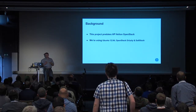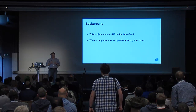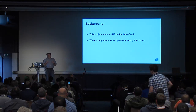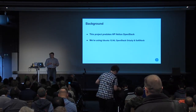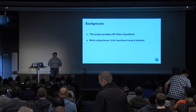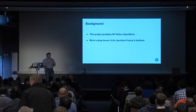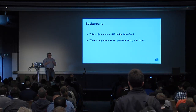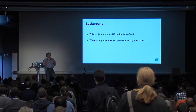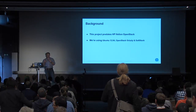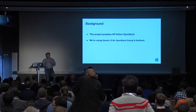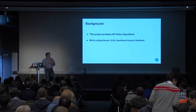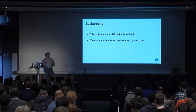A little bit of background. This project predates HP Helion OpenStack, so this is not about a triple O deployment. We're using Ubuntu 12.04 as our base operating system, and we're using Ubuntu's OpenStack packages and SaltStack for configuration management and orchestration. Our real challenge was about building a pipeline that worked with packaged OpenStack and gave us an ability to build a multi-node development environment that people could use on their own personal workstations. Hopefully many of these principles are transferable to whatever makes up your particular cloud ambitions.